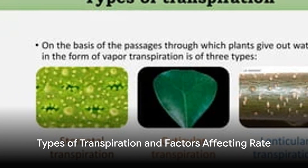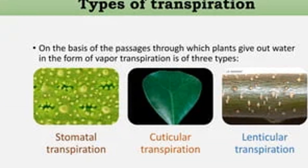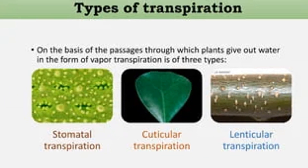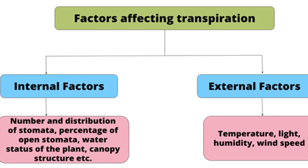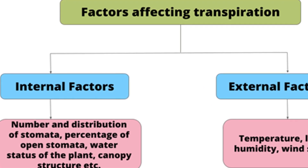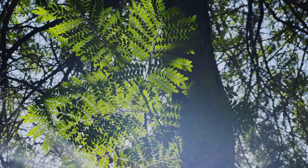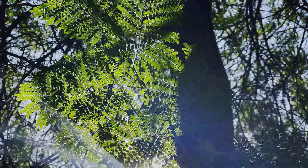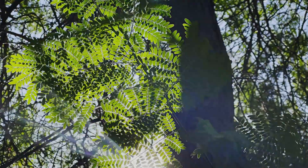Transpiration can be of three types — stomatal, cuticular and lenticular — with stomatal being the most common. Various factors, both plant-related and environmental, can affect the rate of transpiration. For example, high temperatures and wind speed can increase the rate of transpiration.